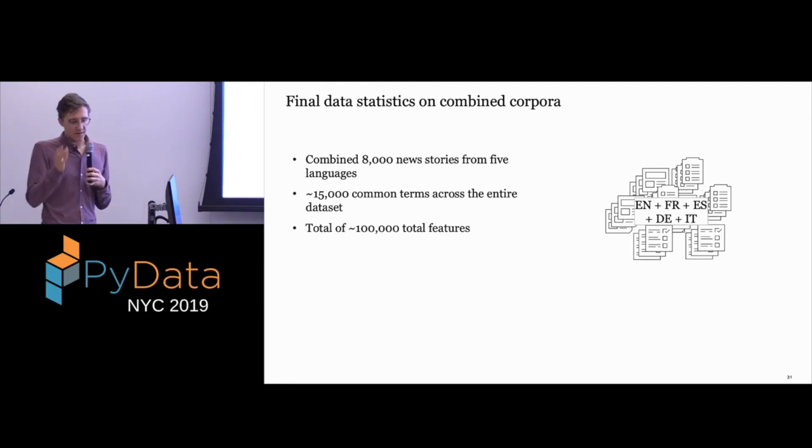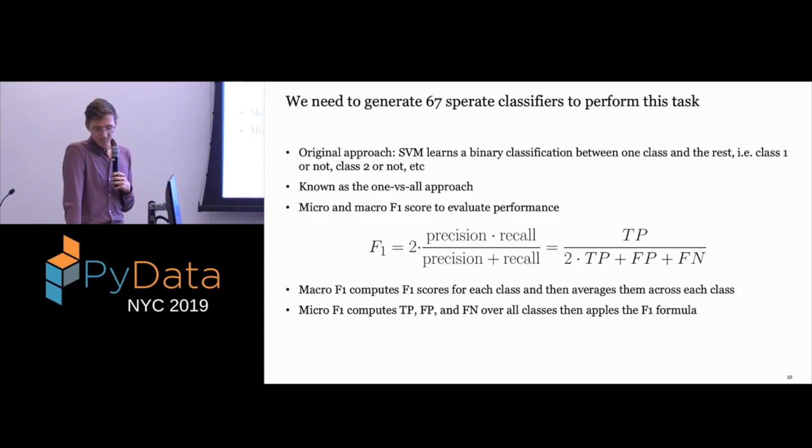These are some final statistics on the data that they actually used. They took 8,000 news stories from five different languages—English, French, Spanish, German, and Italian—and then aligned them all like we saw before. When they got about 15,000 common terms across the entire dataset and a total of 100,000 features. So this is a very underdetermined dataset. It's very fat and very short. That's okay though. You just have to regularize. Basically the way that you do this is you just do all versus one classification. You generate 67 different classifiers that are performing just a binary task that says is this class one or not? Is it class two or not? Et cetera. And then they used micro and macro F1 score.